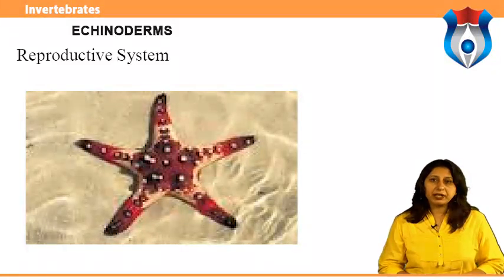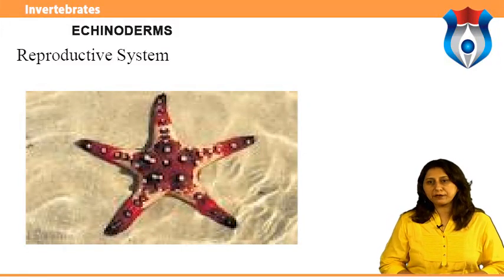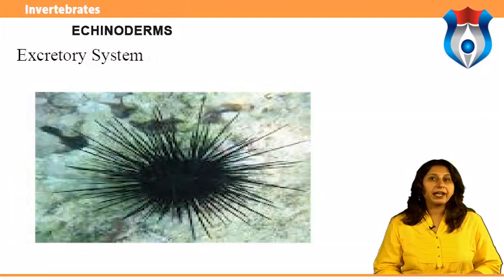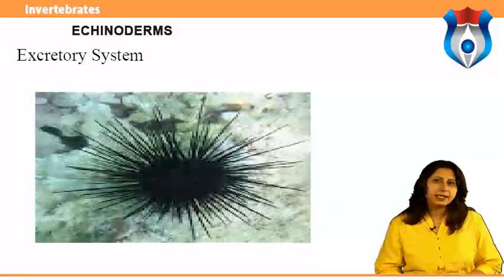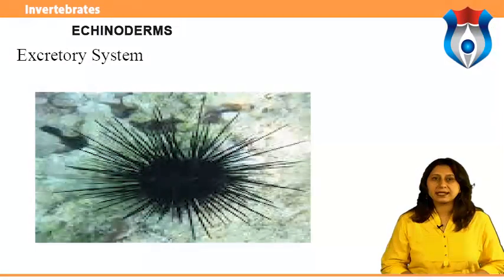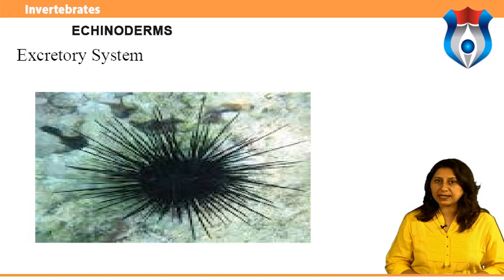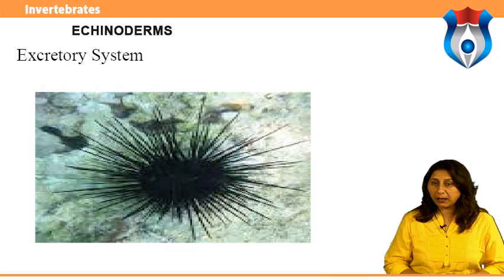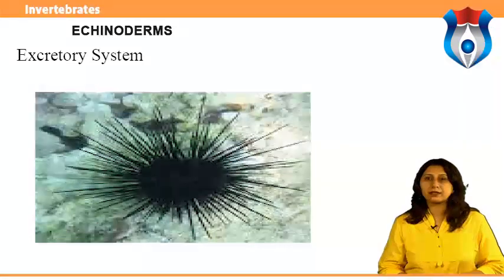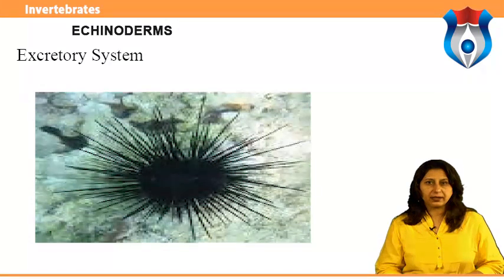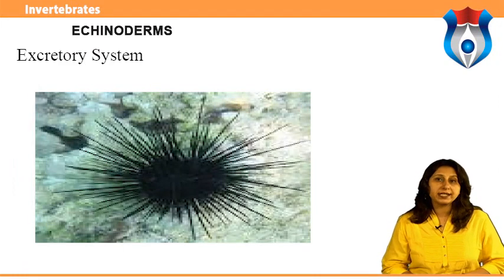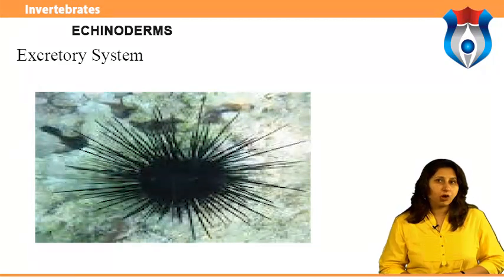Echinoderm lifestyles vary greatly: sea stars are generally predators or detritivores eating decomposing material; crinoids and some brittle stars are passive filter feeders; sea urchins are grazing herbivores; sea cucumbers are deposit feeders. Predators of echinoderms include crabs, sharks, eels, other fish, seabirds, octopuses, and larger starfish. Echinoderms use their skeletons, spines, toxins, and sticky entangling threads as defense mechanisms.